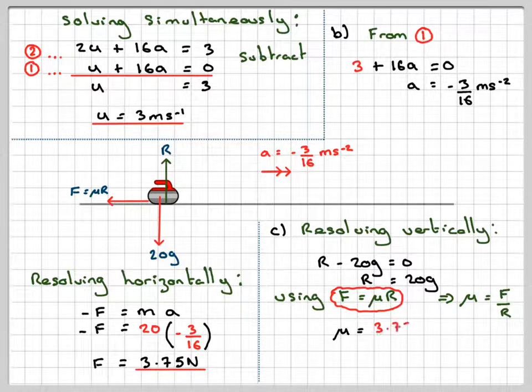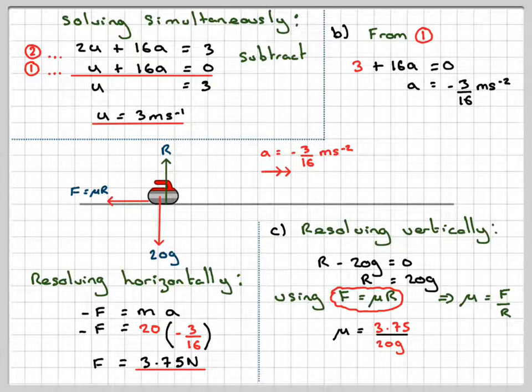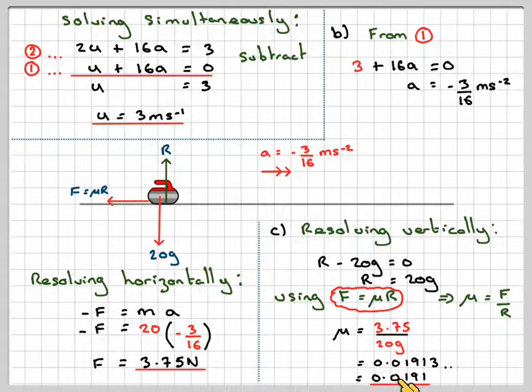So that's going to be equal to 3.75, the frictional force, divided by the normal reaction, which is 20g. Taking 9.8 as metres per second squared as g, that will give an answer of 0.01913. Which gives an answer of 0.0191 to 3 significant figures.